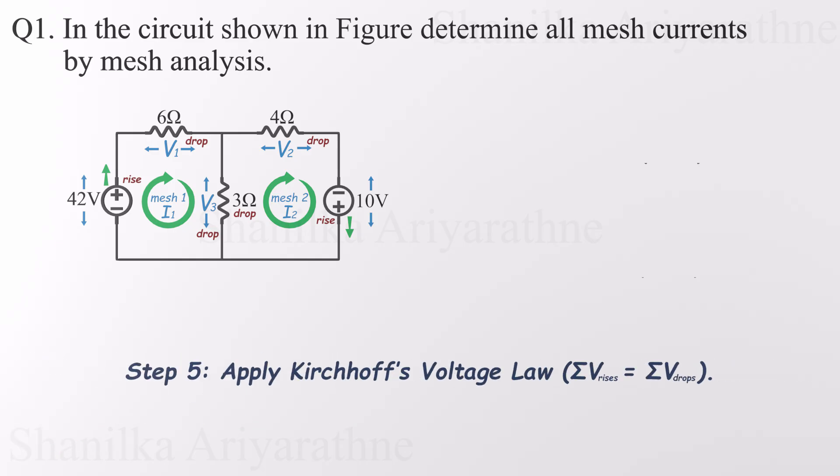Now we're ready to apply Kirchhoff's voltage law, starting with mesh 1. As we loop around, we see a voltage rise of 42 volts from the source, and two voltage drops across the resistors, V1 and V3. So the equation becomes 42 volts equals V1 plus V3.